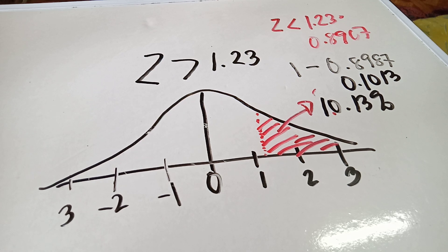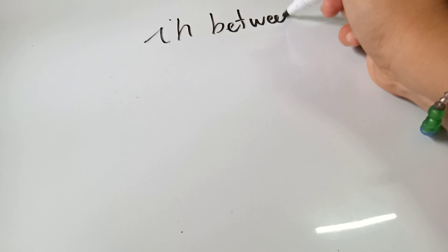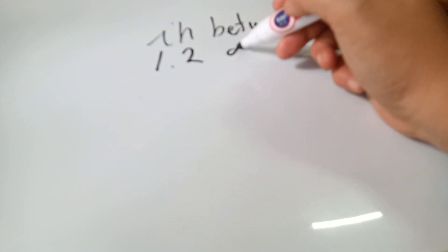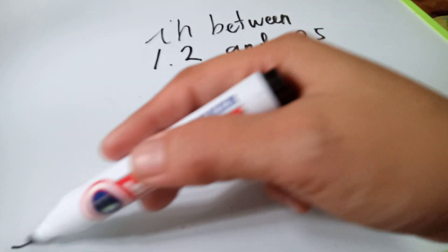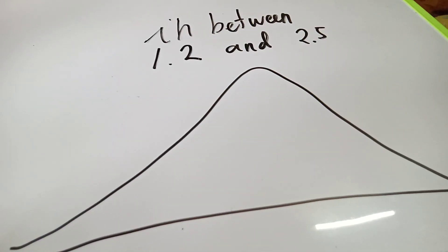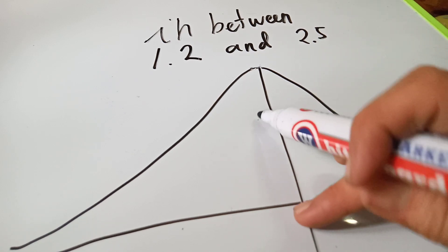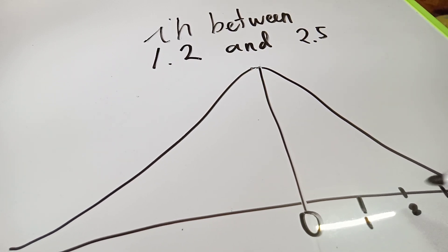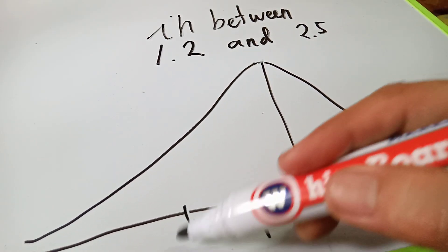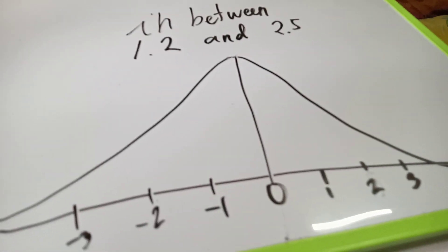Let's have another example. If we need to find the area in between 1.2 and 2.5 on the normal curve — when we speak about in between, first we need to draw a normal curve. Again we write 0, positive 1, positive 2, positive 3, negative 1, negative 2, and negative 3. This is our normal curve image.